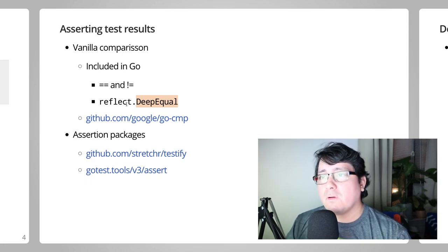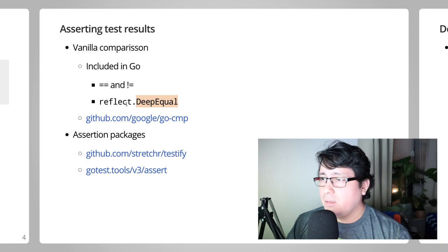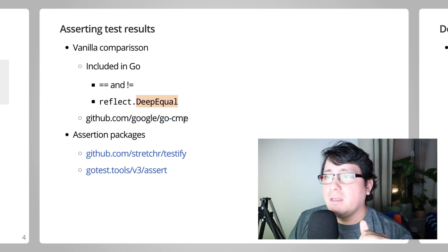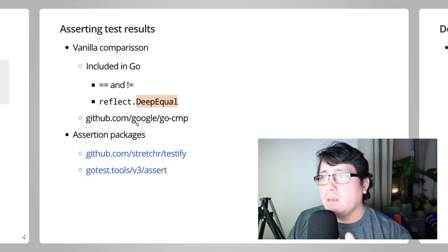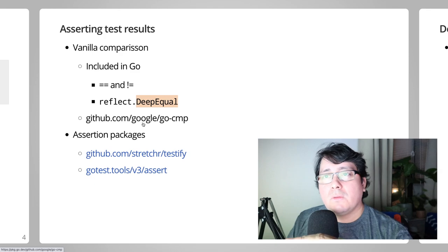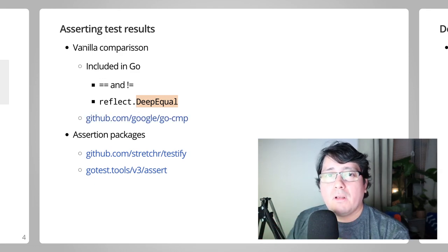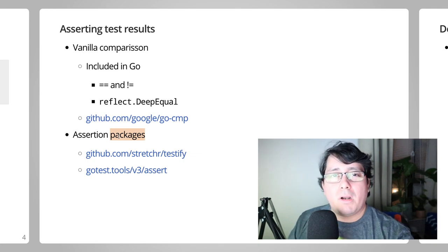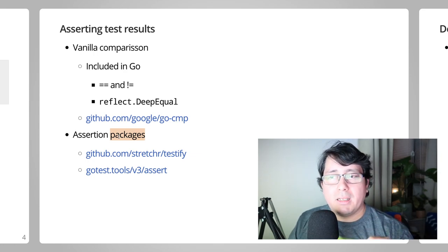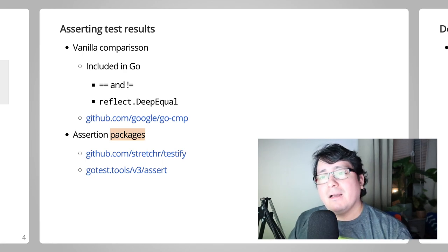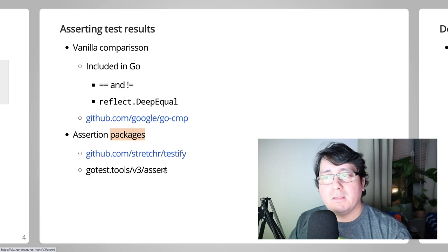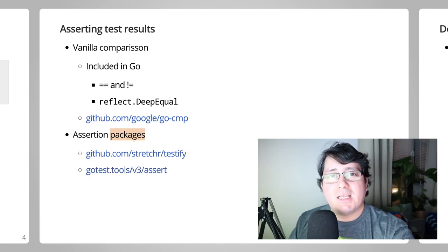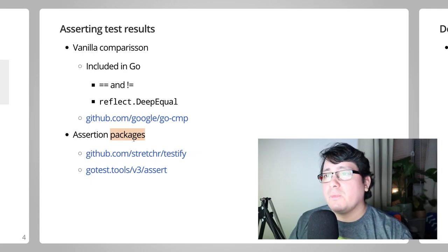There is another option for comparing results — literally checking if this value equals this value — which is the go-cmp package I'm about to describe. Besides those vanilla options, there are also packages that do assertions. The idea of asserts is similar to comparison but slightly more to the point. Personally I don't use these libraries, but I'm mentioning them as another way to achieve the same result.